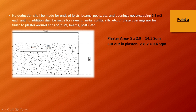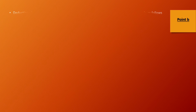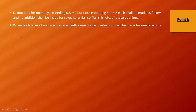If it is plastered, then only one side will get it — you won't have to minus this part. Point B: if there is an opening from 0.5 to 3 square meters, the first condition is that both sides of the wall are plastered with the same plaster. Deductions shall be made for one side only.